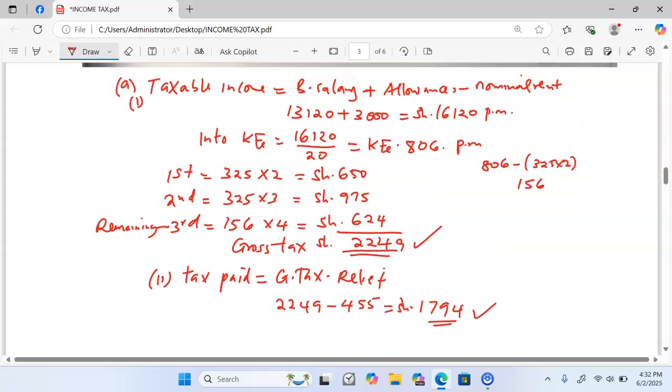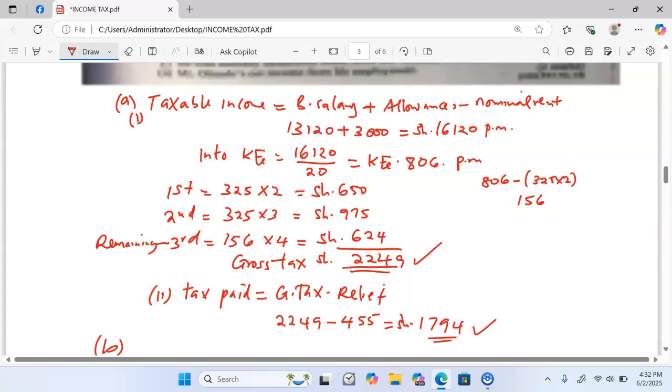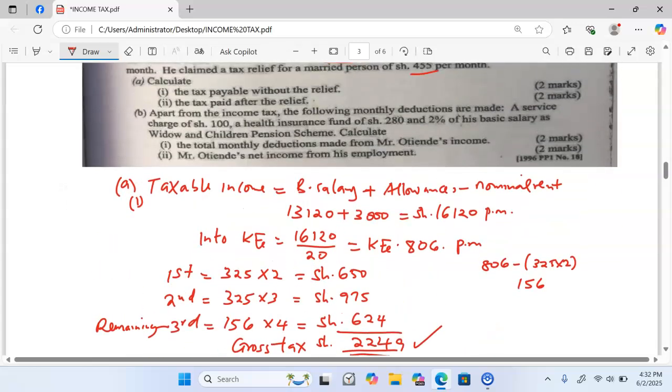We move to part B. In part B we are told, apart from the income tax, the other deductions that were made were as follows.